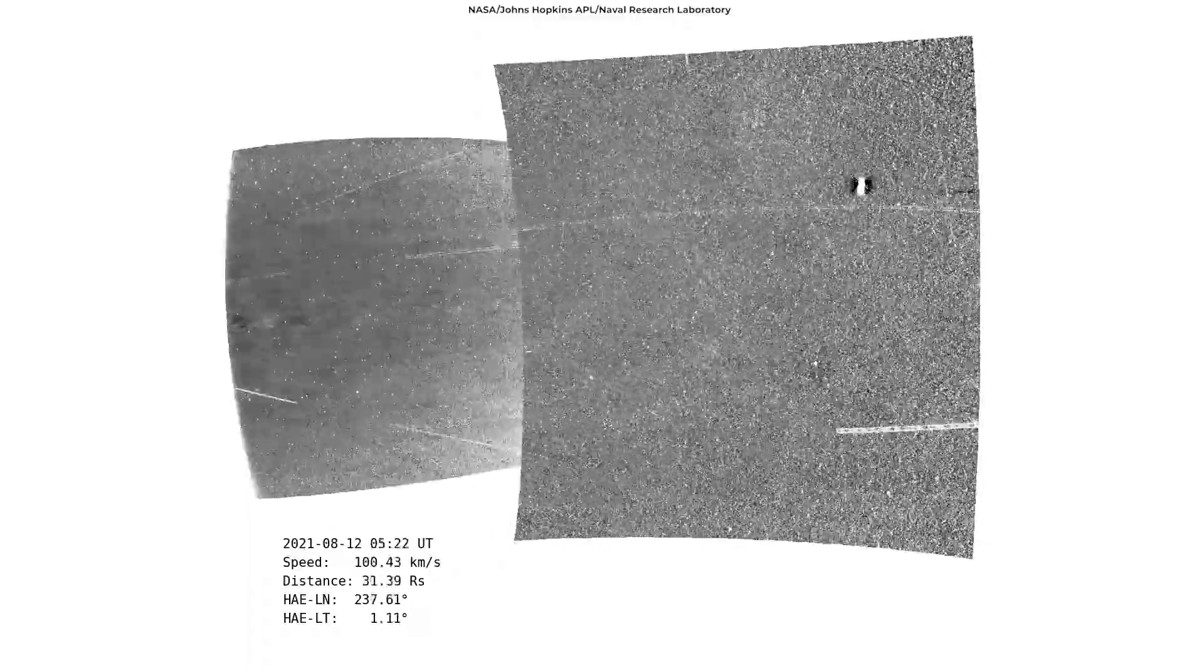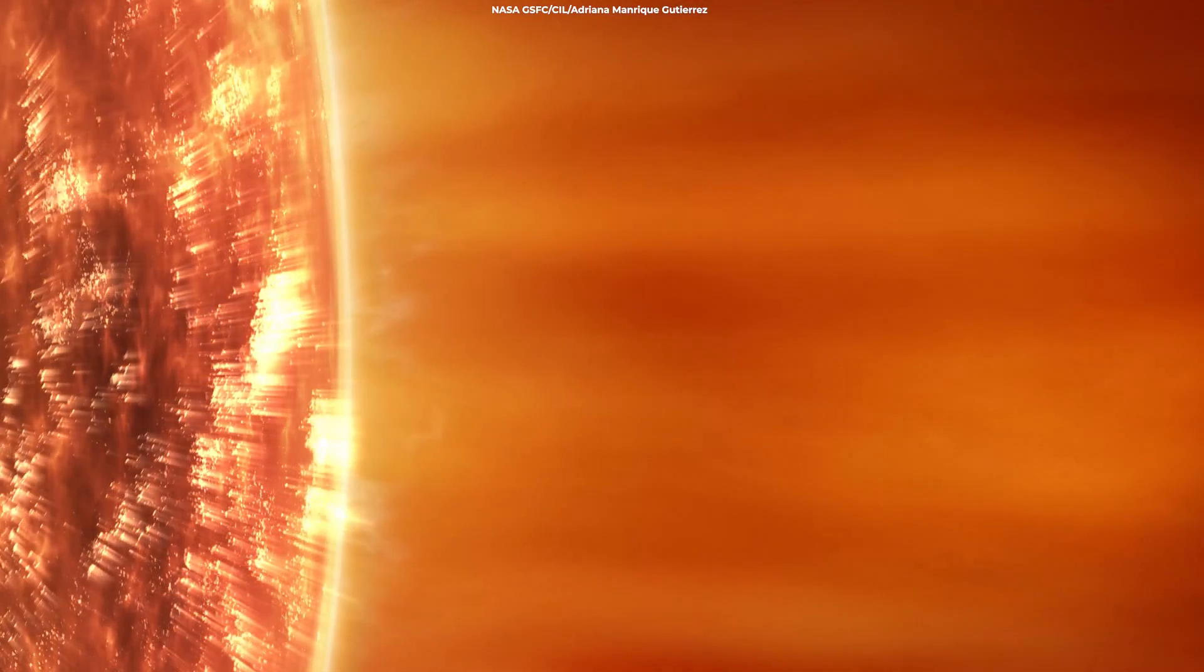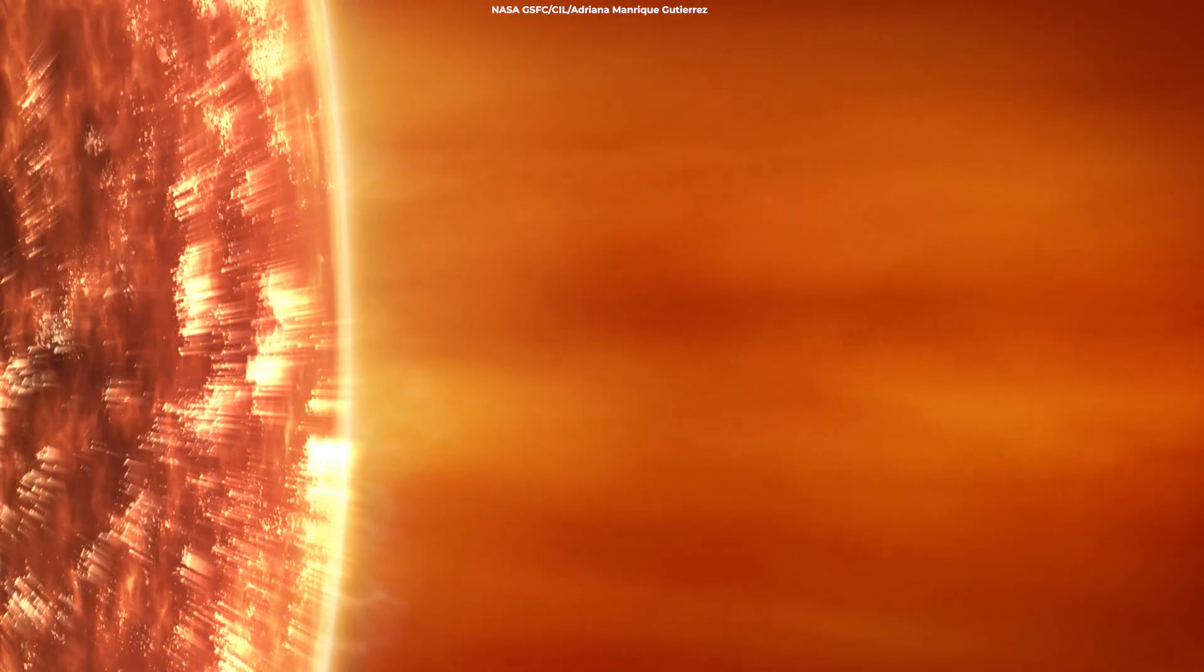Solar material with enough energy to pass that point becomes the solar wind, which carries the Sun's magnetic field with it as it speeds through the solar system to Earth and beyond. Significantly, the solar wind moves so fast beyond the Alfvén critical surface that waves within the wind can never travel fast enough to return to the Sun, severing their connection.